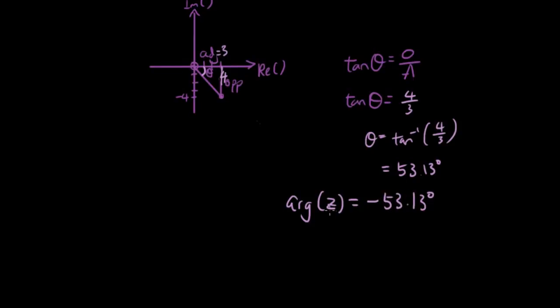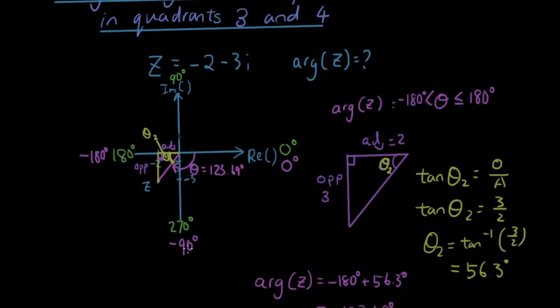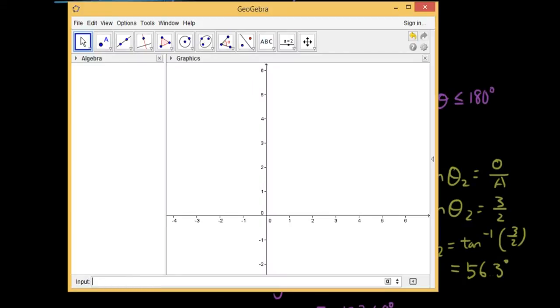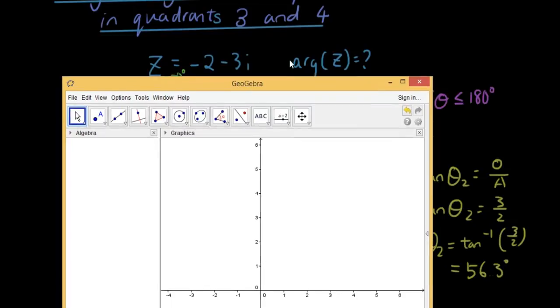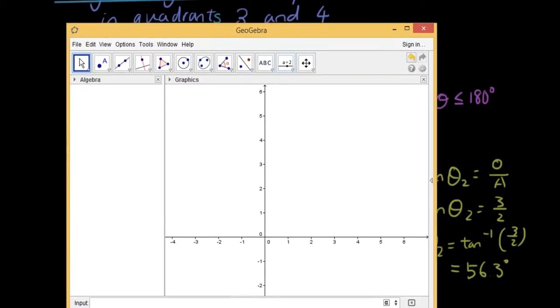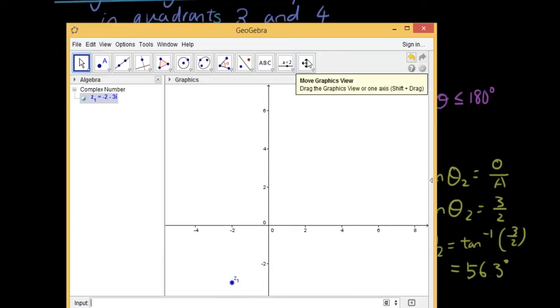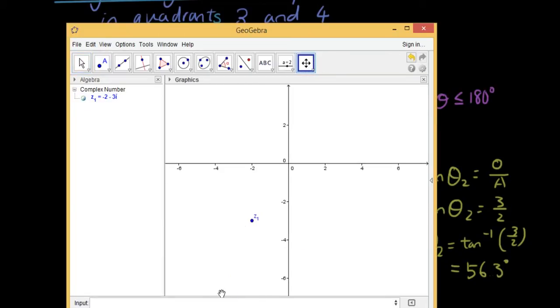And let's check our answer in GeoGebra. So by the way, every single question we have done you can check your answer in GeoGebra. So in GeoGebra all you have to do is you type the complex number in. So let's do, for example, negative 2 minus 3i. That was the first one we did today. So we've got the complex number over here. It's drawing the complex number. And if we just type arg bracket z underscore 1 in the input panel and press enter, then it tells you the argument.